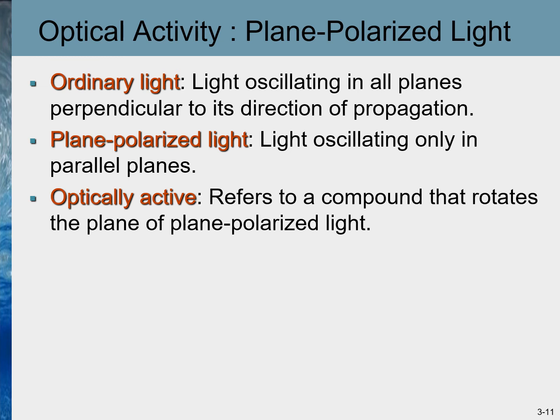We have established that enantiomers are different compounds, so they must have different properties. Yet the table showed that enantiomers have exactly the same density, melting point, and pKa values. The one property that differs between enantiomers is their effect on the rotation of plane-polarized light — this is known as optical activity. Each member of a pair of enantiomers rotates the plane of polarized light in the opposite direction, and for this reason enantiomers are said to be optically active. To understand this, we need to learn about plane-polarized light.